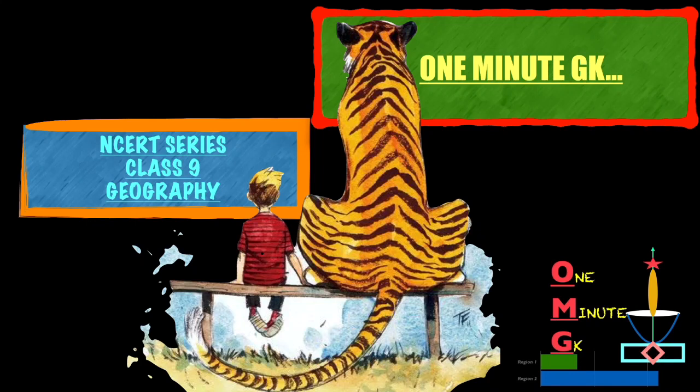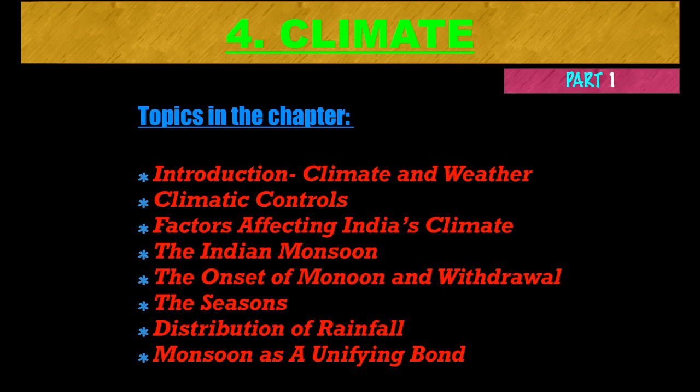Hello friends, welcome to One Minute GK. In this video, I bring to you Part 1 of Chapter 4 of 9th Geography NCERT, i.e., Climate. Let's see the topics in this chapter: Introduction of Climate and Weather, Climatic Controls, Factors Affecting India's Climate, The Indian Monsoon, The Onset of Monsoon and Withdrawal, The Seasons, Distribution of Rainfall, and Monsoon as a Unifying Bond. In Part 1, I will cover the first 4 topics.